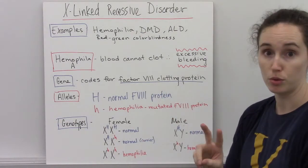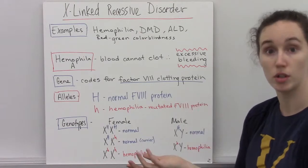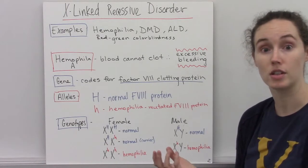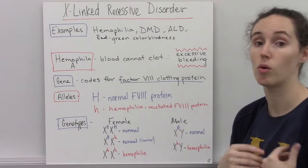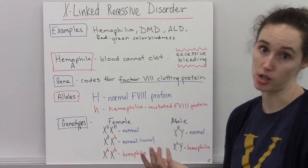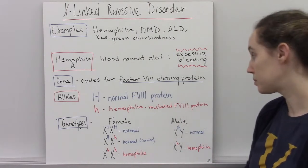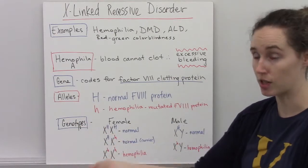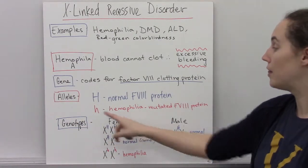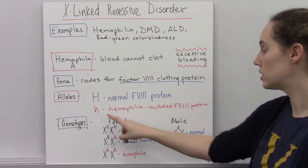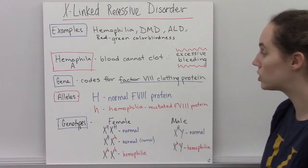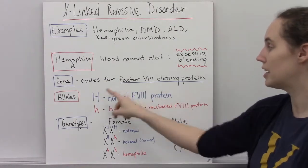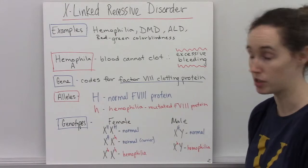There are two alleles for this: the normal Factor VIII protein gene, and the mutated or non-functioning Factor VIII gene, which results in a non-functioning Factor VIII protein and therefore hemophilia. The normal F8 protein gene is dominant over the hemophilia gene.